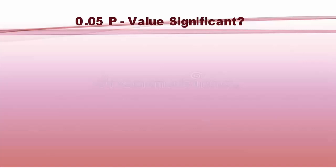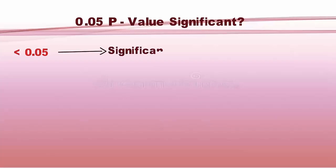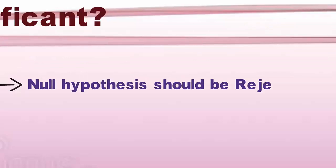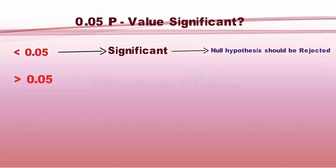Is a 0.05 P-value significant? A P-value less than 0.05 is typically considered to be statistically significant, in which case the null hypothesis should be rejected. A P-value greater than 0.05 means that deviation from the null hypothesis is not statistically significant, and the null hypothesis is not rejected.